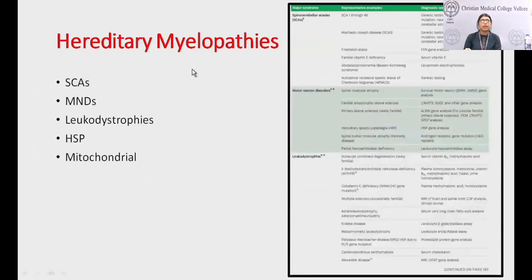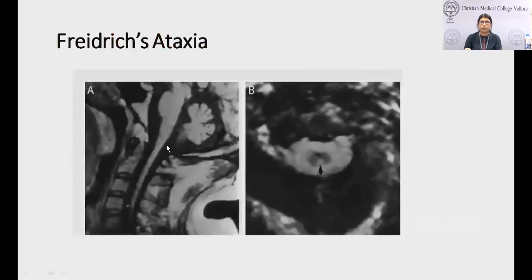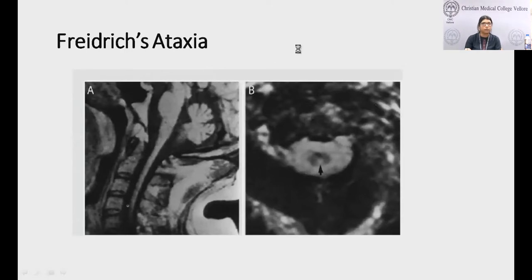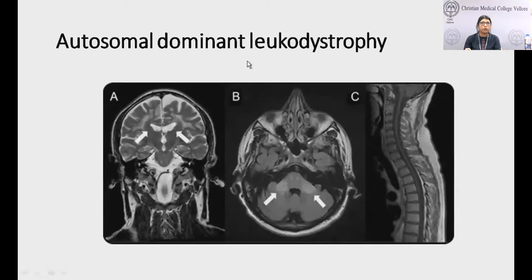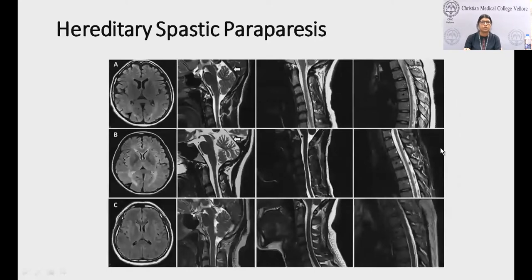Hereditary myelopathies include spinal cerebellar ataxias, motor neuron disorders, leukodystrophies, hereditary spastic paraparesis, and mitochondrial disorders — which, in addition to other structure involvement, can have spinal cord involvement. The commonest autosomal recessive ataxia is Friedreich's ataxia, where the dorsal and lateral spinal cerebellar tracts are atrophied — seen as thinning of the cervical cord on MRI. Various leukodystrophies can also show cord thinning presenting as spastic paraparesis or myelopathy.